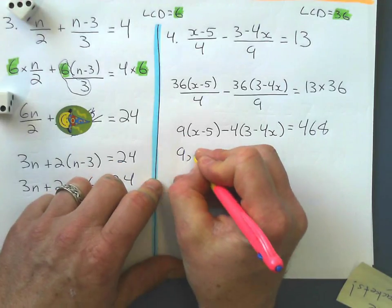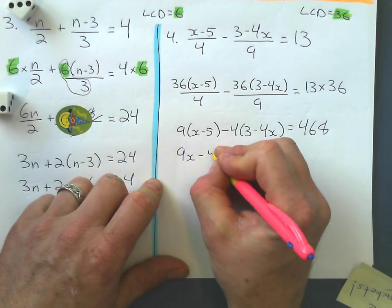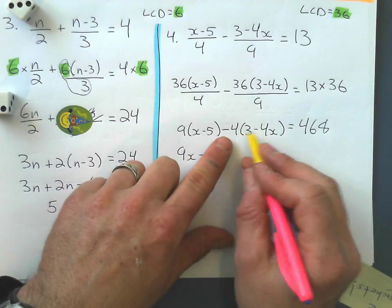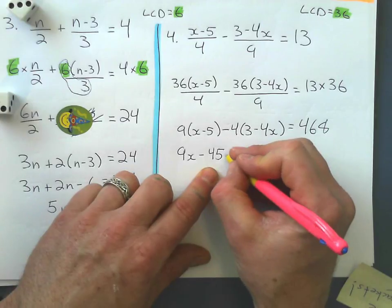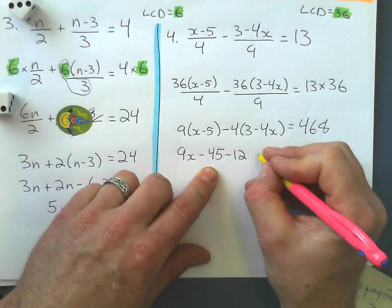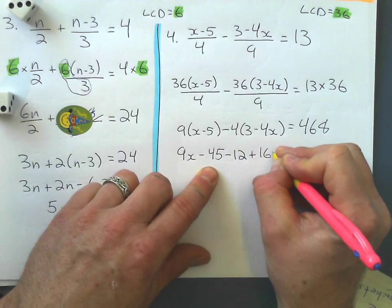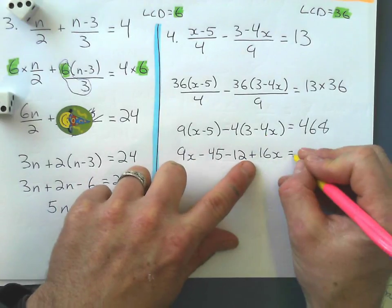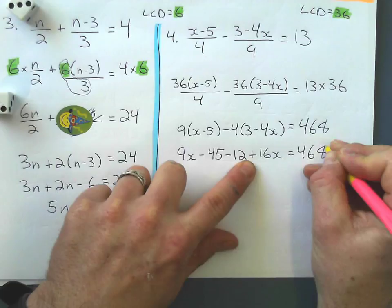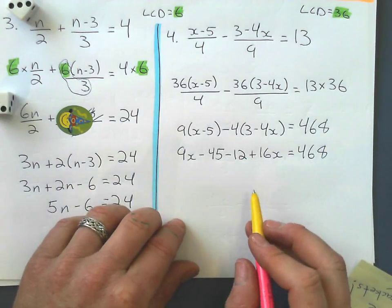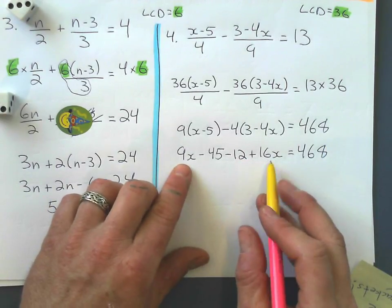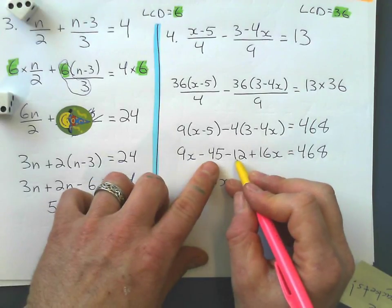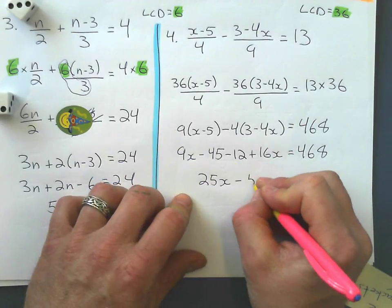Expand right here, and I get 9x minus 45. Expand right here, and don't forget you expand that negative 4 through, not just the 4. So, I get a minus 12 plus 16x, not minus, because negative 4 times negative 4x is positive 16x equals 468. Collect like terms. I get 25x, 25x, and these guys combine to minus 57.